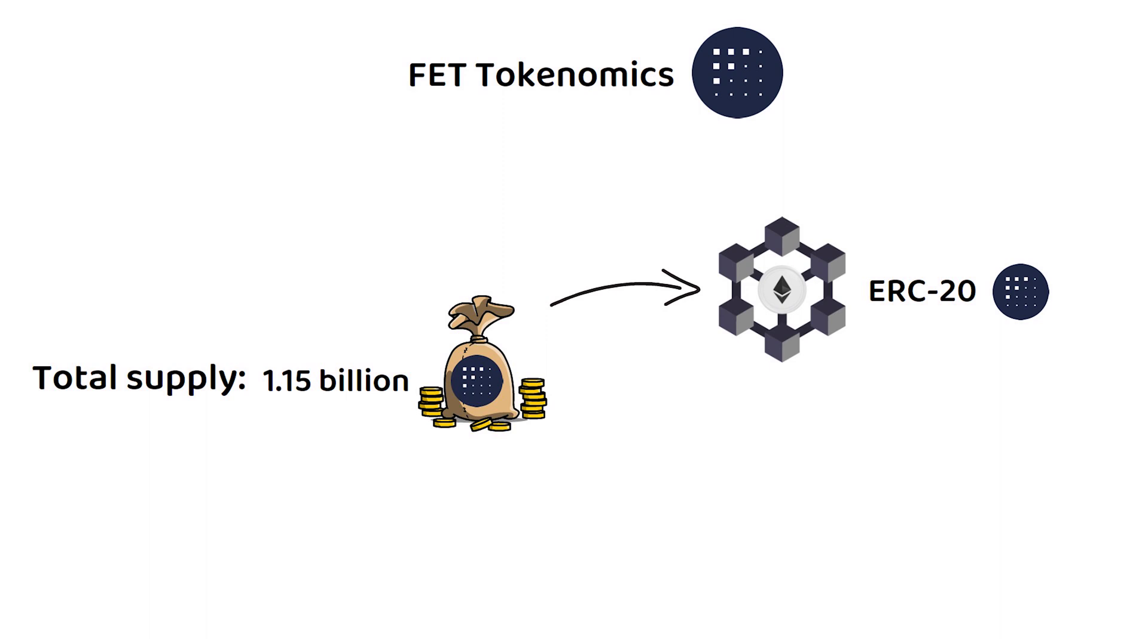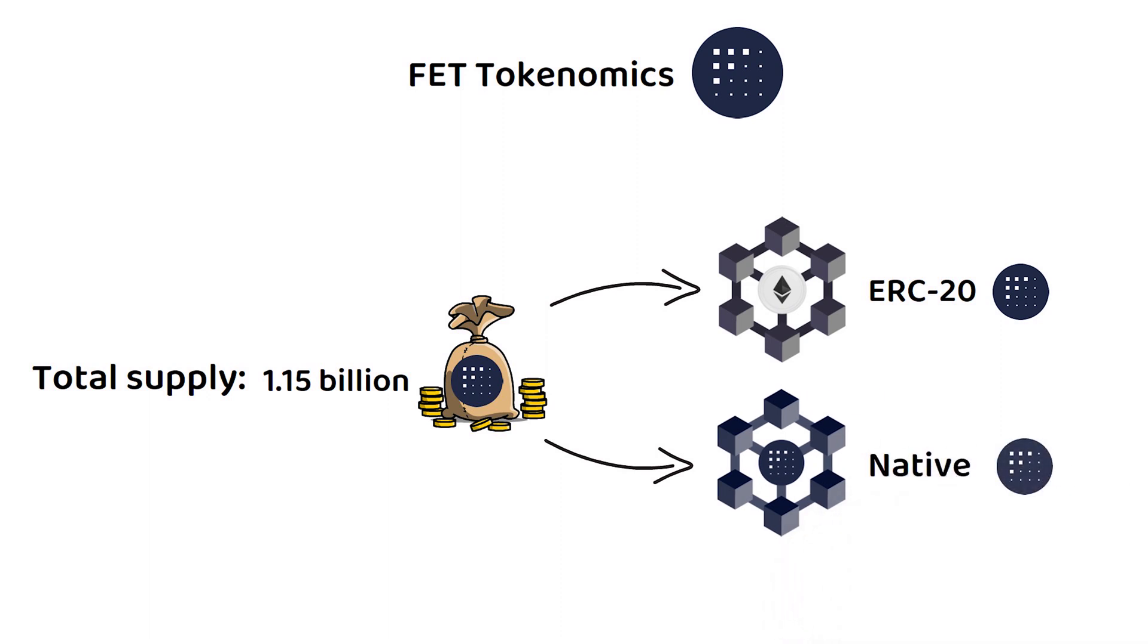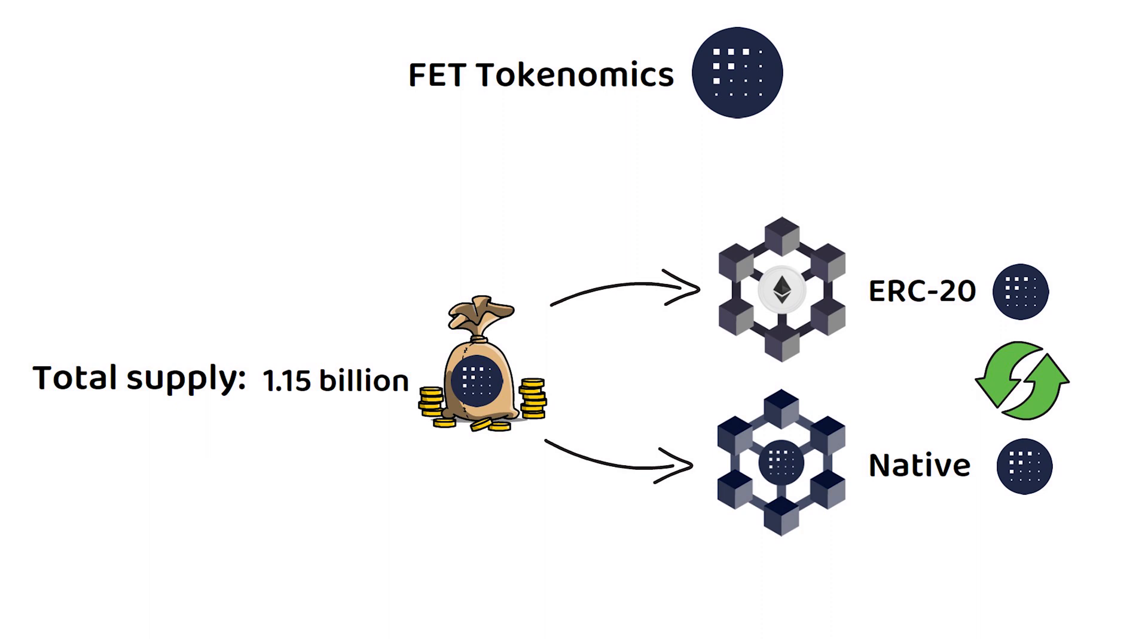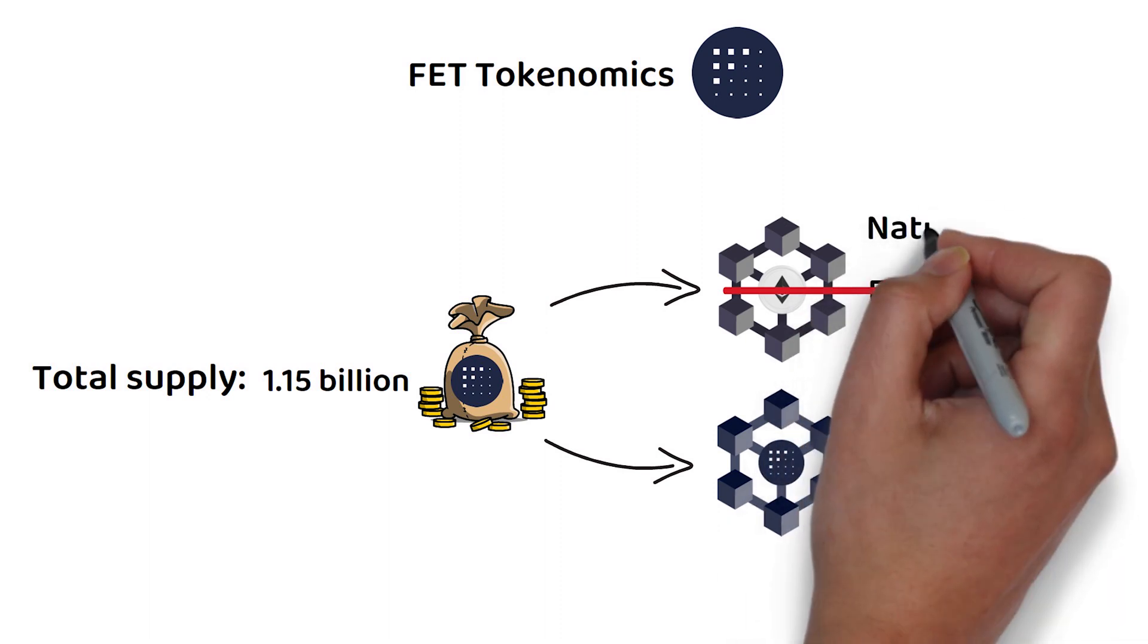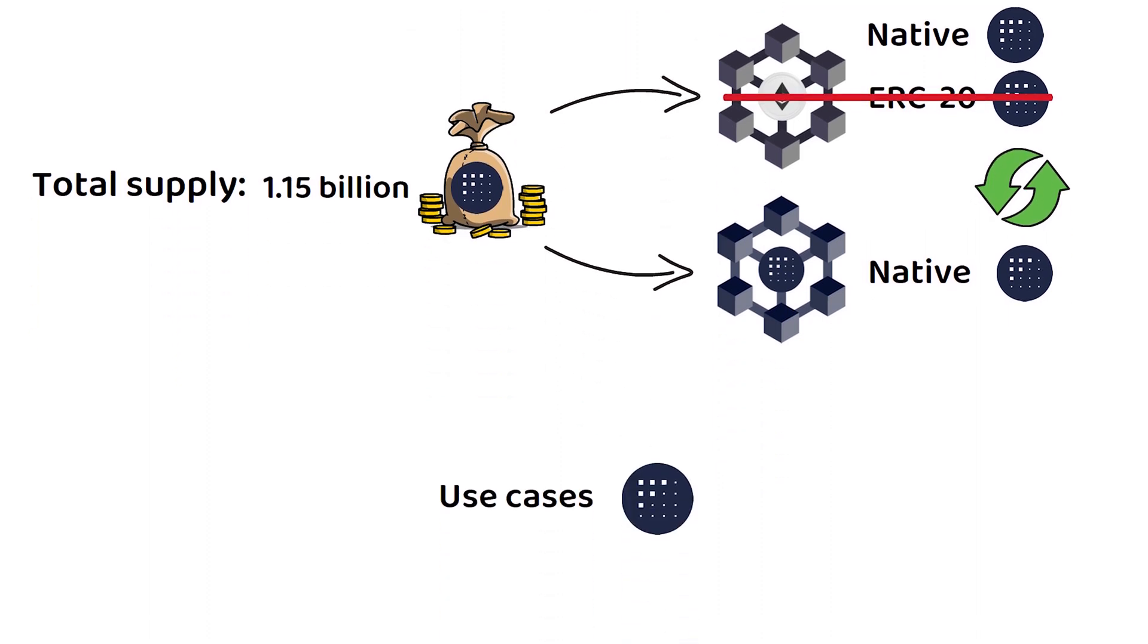However, when the Fetch mainnet went live, the native FET token was born. The native FET token and the ERC20 token version of FET work side by side and are easily interchangeable with one another. Eventually, all ERC20 FET tokens will be replaced with the native FET tokens. But for the foreseeable future, the two FET tokens will continue to co-exist alongside each other.